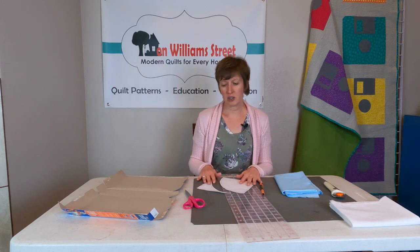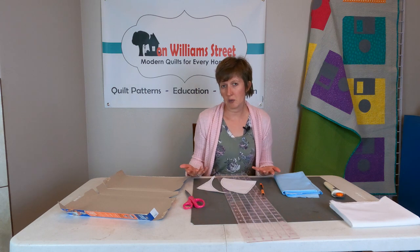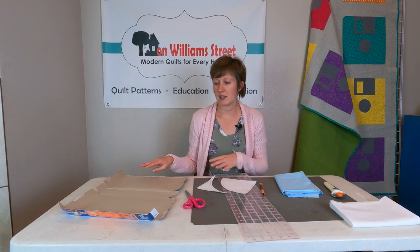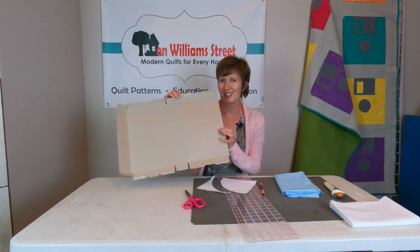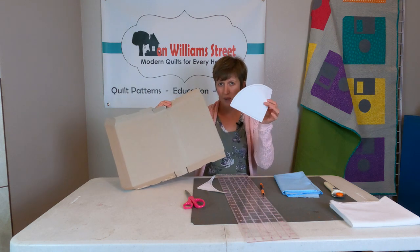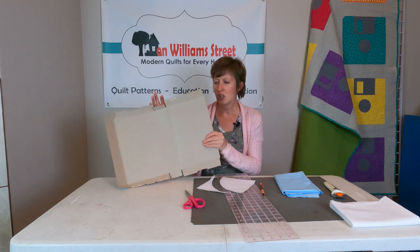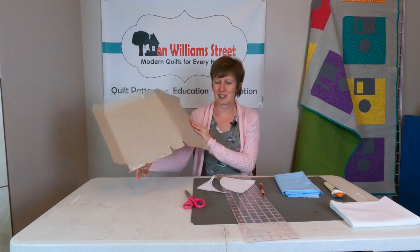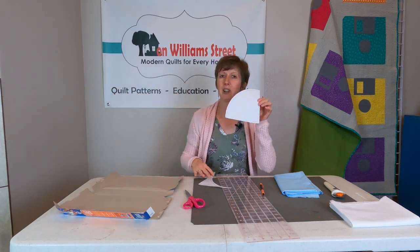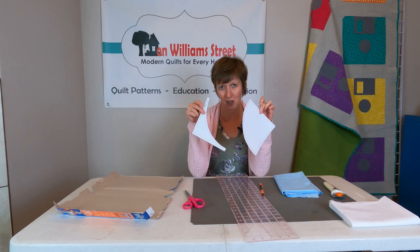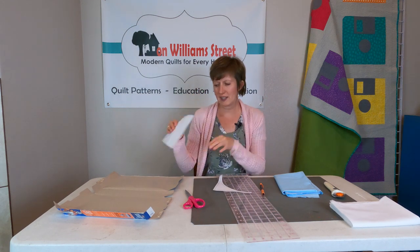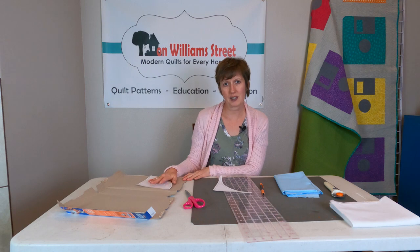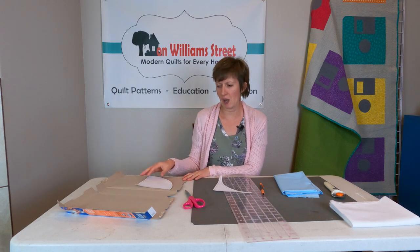So the first thing that we're going to do is what I like to do when I'm doing a bunch of templates is I like to create myself something that's a little stiffer than just the paper when I'm tracing and cutting. So a cereal box is perfect for this. I already have my templates and I've cut them out already. So I'm going to trace them onto the cereal box and then cut them out of the cereal box.